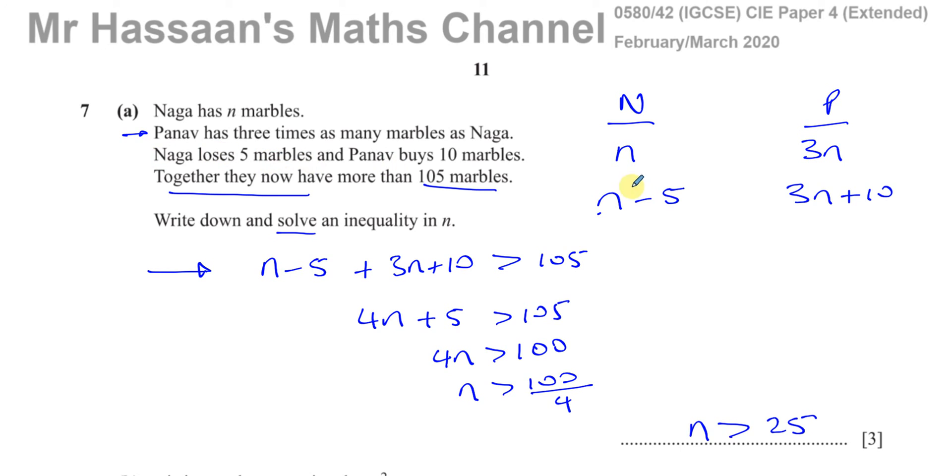And Panav buys 10 marbles means he's going to have 10 more marbles. He had three N already. You have to add 10 to that. And then it says together. So together means when you add them together, you're going to have more than, greater than 105. So it's all about translating the statements in all the sentences from English into mathematical statements. And then once you've got your inequality, then solving it.